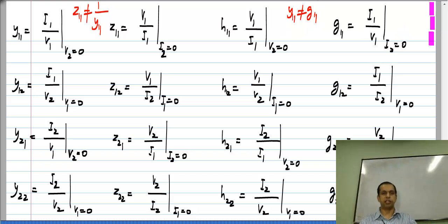Please do not make elementary mistakes like this while converting from one parameter set to another. What is true is that Y11 is I1 by V1 with V2 equal to 0, that is port 2 short circuited. H11 is V1 by I1 with V2 equal to 0, also with port 2 short circuited.